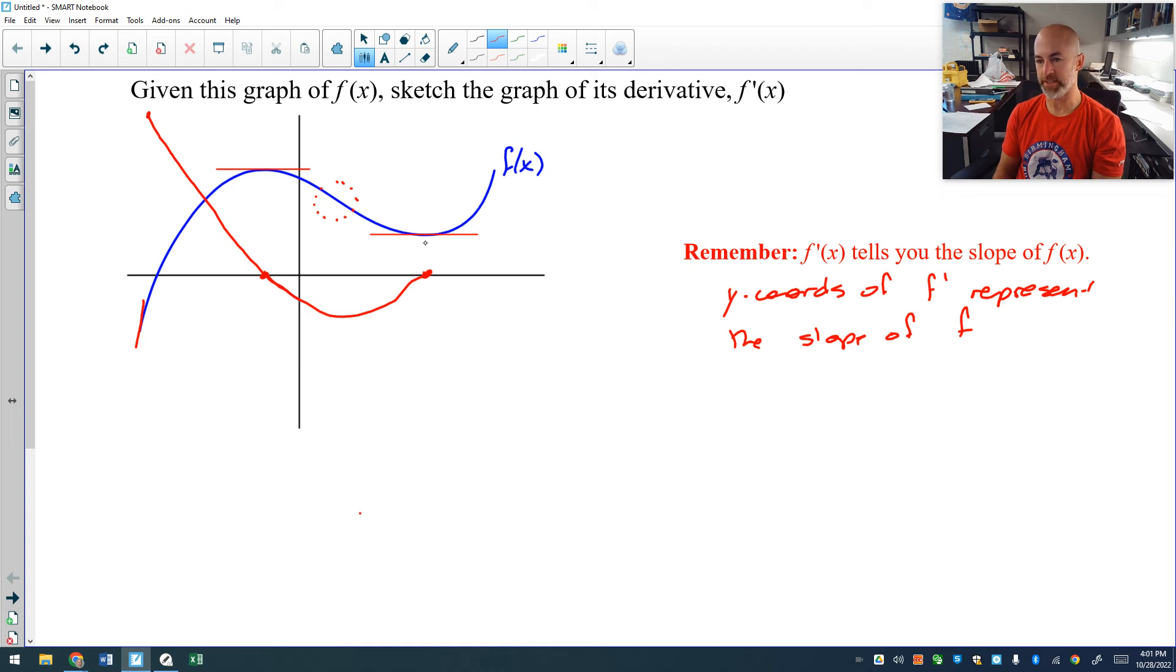And then after that zero, we go back to positive slopes. So my slopes are positive everywhere after that, so my derivative is going to be above the x-axis. And that's the idea. We're going to have some just very rough graphs of what the derivative would look like. And then on occasion, you can do this.